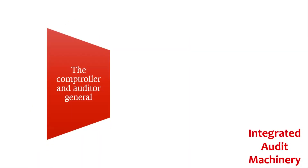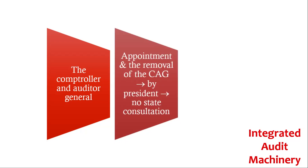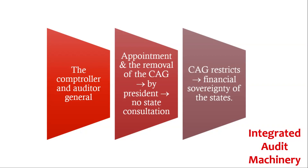Integrated Audit Machinery: The Comptroller and Auditor General of India audits the accounts of both the central government and the state governments. However, the appointment and removal of the Comptroller and Auditor General of India is done by the President without consulting the states. For this reason, the office of the Comptroller and Auditor General of India restricts the financial sovereignty of the states.